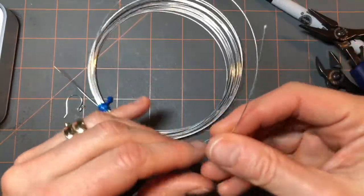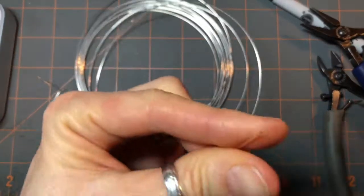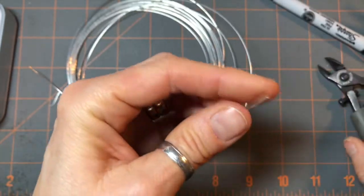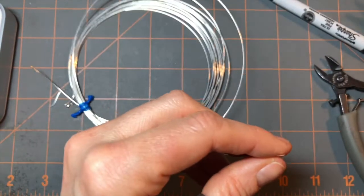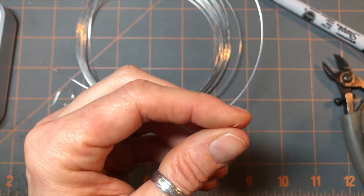Alright. Now you gotta make another one exactly like it. So that's the trick is to try to make them symmetrical. So you go through the same process again.